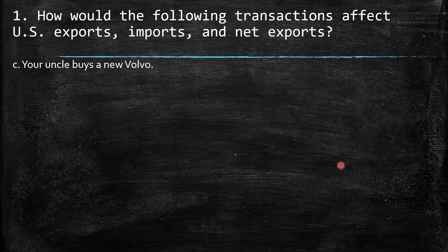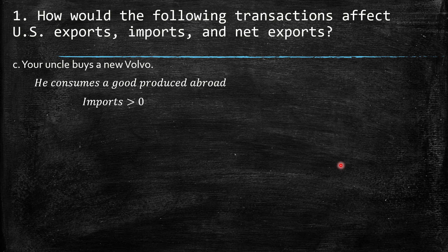C: Your uncle buys a new Volvo. He consumes a good produced abroad — this is from Sweden. So this should be an import increase, and as a consequence, if all things remain the same, we have the net exports change negative.